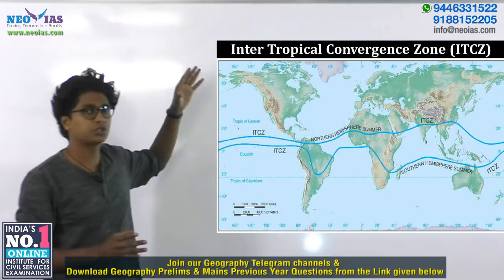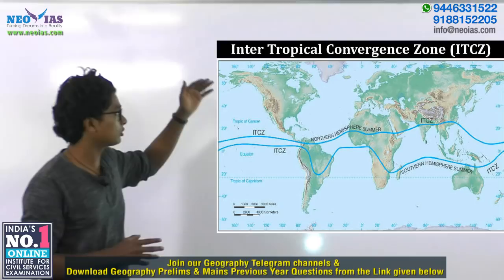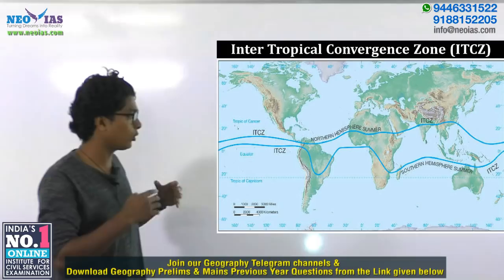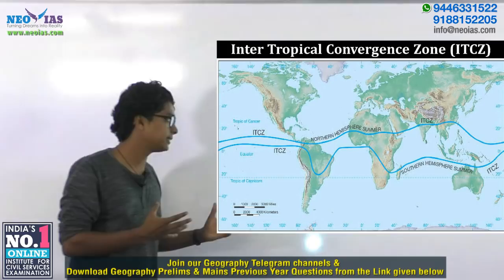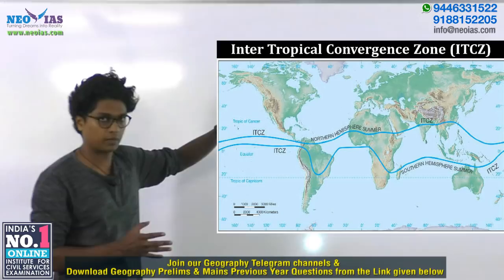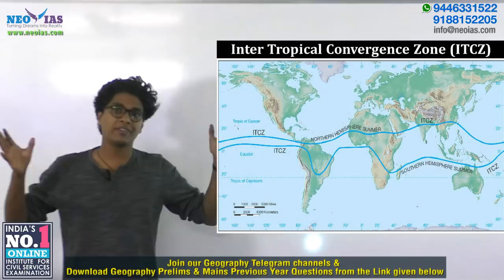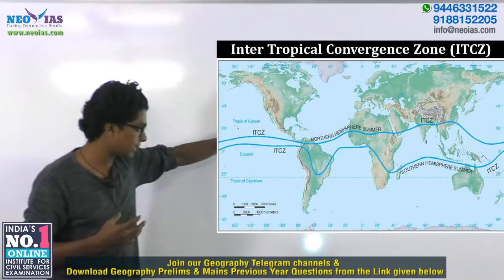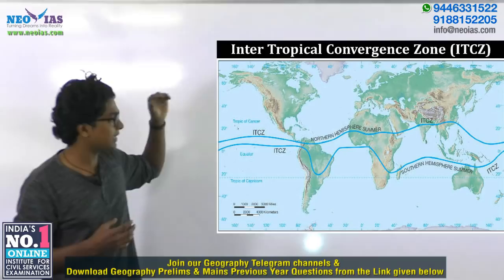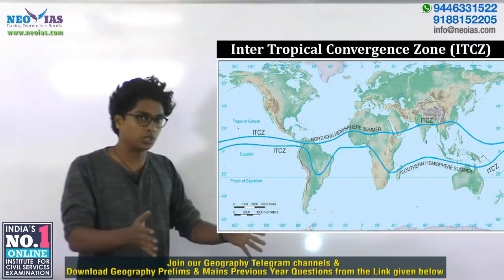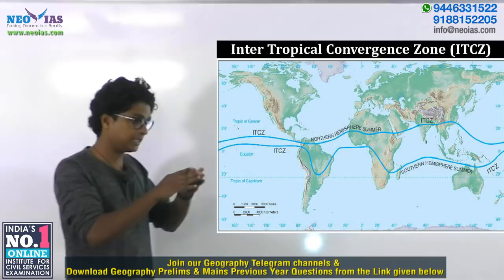A very important factor which can influence the Indian monsoon is the Intertropical Convergence Zone, also called the ITCZ. It's a low pressure region, and as the name suggests, it's within the tropics where winds are converging. The prevailing winds — the northern trade wind and the southern trade wind — converge at the ITCZ, and whenever winds converge they rise up, leaving behind low pressure regions near the surface.